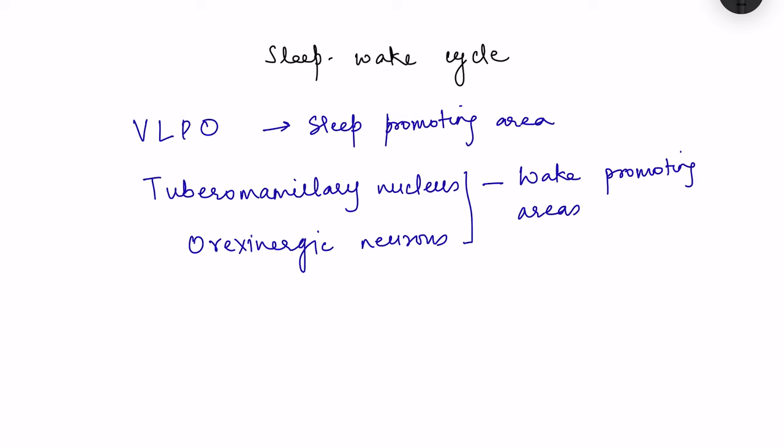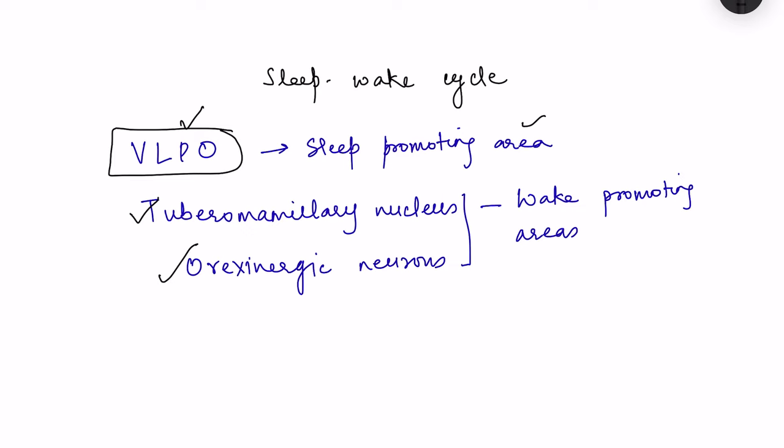For the sleep-wake cycle, a detailed video is available in the description. In brief, the hypothalamus has nuclei that regulate sleep and waking. The ventrolateral preoptic nucleus is a very important sleep-promoting area. Wake-promoting areas include the tuberomammillary nucleus and orexinergic neurons. The role of the hypothalamus and brainstem areas in the sleep-wake cycle is covered in detail in that video.